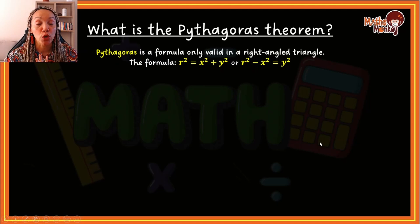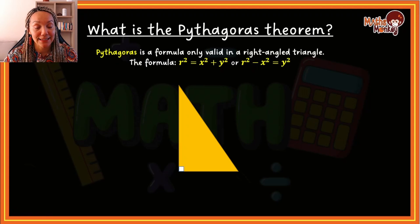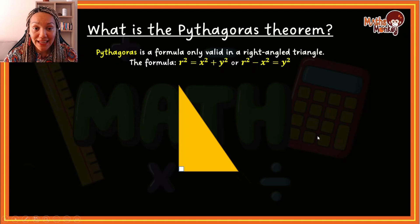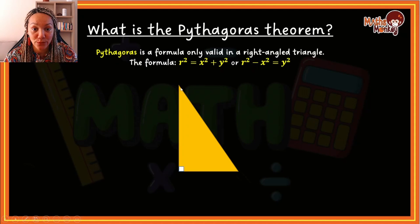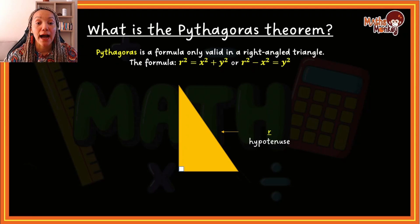You will only apply Pythagoras to right angle triangles — that's the triangle where one angle is equal to 90 degrees. We've got three sides and each side represents a letter in our formula. The longest side, which is always opposite the 90 degrees, is always considered the r in our formula. The r represents the hypotenuse — just a fancy name for the longest side in a right angle triangle.